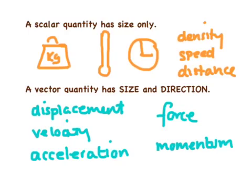A vector quantity though has size and direction. And this is very important with the topic of motion, because we've got lots of quantities such as displacement, velocity, acceleration, force and momentum, where the direction is as important as the actual size of the vector itself.